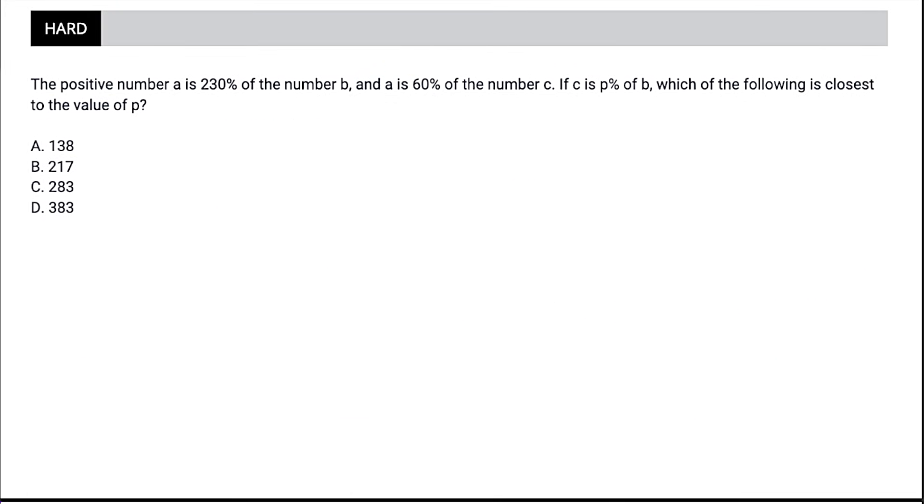This percentage question is really just about turning words into math. So let's turn words into math. It starts off by telling us A is, is means equals, 230%, that's 2.3 in number form, of means multiplied by the number B. It's also telling us A is, so let's get another equation here, A equals 0.6 is 60% of the number C. And then finally, it's giving us this third equation. And this is the one that we're going to be focusing on because we're solving for P eventually. So C is P percent. We could think of that as like point P of the number B.